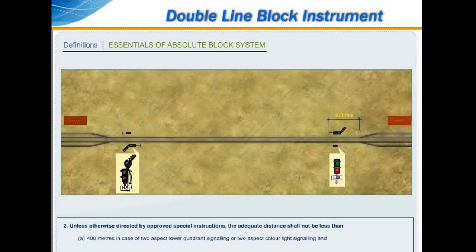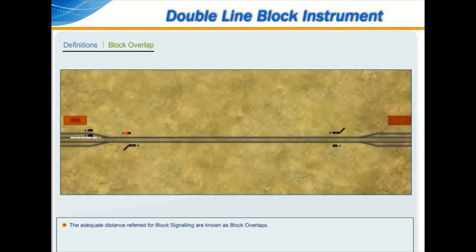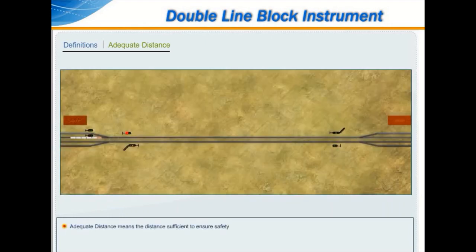Unless otherwise directed by approved special instructions, the adequate distance shall not be less than 400 m in case of two-aspect lower quadrant signalling or two-aspect colour light signalling, and 180 m in case of multiple-aspect signalling or modified lower quadrant signalling. The adequate distances referred to for block signalling are known as block overlaps. Adequate distance means the distance sufficient to ensure safety.